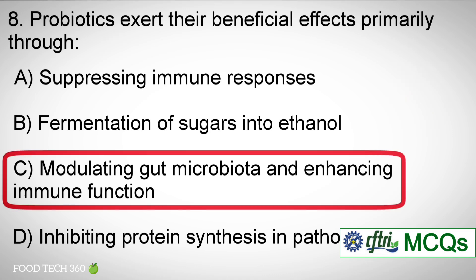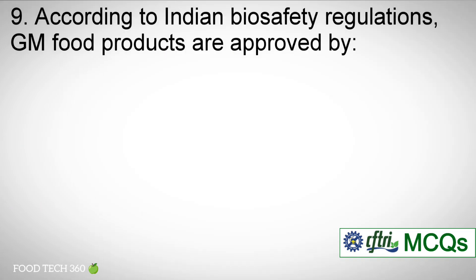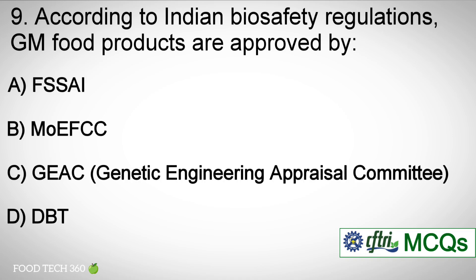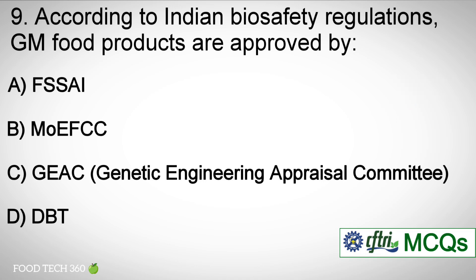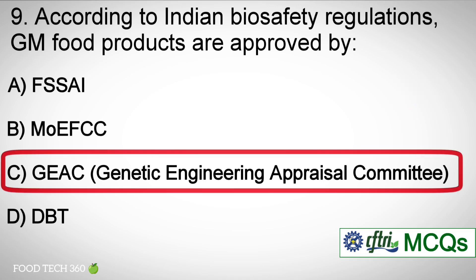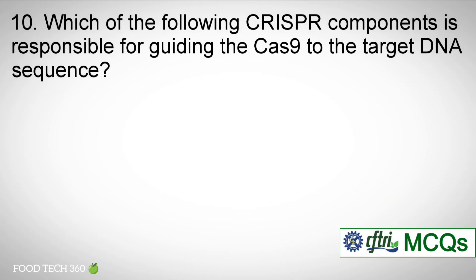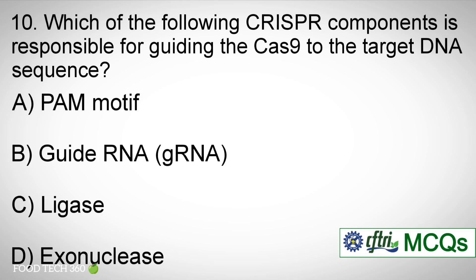Question number nine: According to Indian biosafety regulations, GM food products are approved by — Options: A) FSSAI, B) MoEFCC, C) GEAC, D) DBT. Correct answer: C) Genetic Engineering Appraisal Committee (GEAC). Question number ten: Which of the following CRISPR components is responsible for guiding the Cas9 to the target DNA sequence? Options: A) PAM motif, B) Guide RNA, C) Ligase, D) Exonuclease. Correct answer: B) Guide RNA.